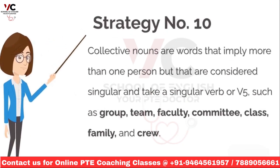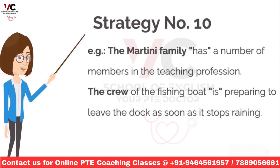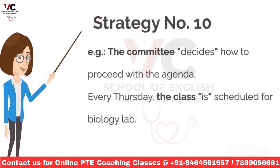Strategy number 10: collective nouns are words that imply more than one person but that are considered singular and take a singular verb or V5, such as group, team, faculty, committee, class, family, and crew. For example, a group of concerned citizens is. The team meets. The faculty has. The martini family has. The crew of the fishing boat is. The committee decides. Every Thursday, the class is.